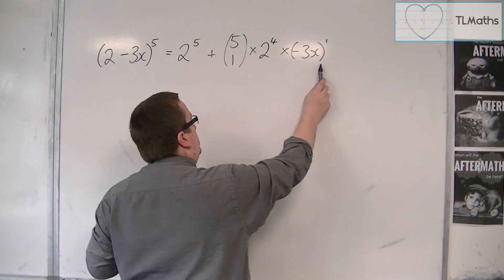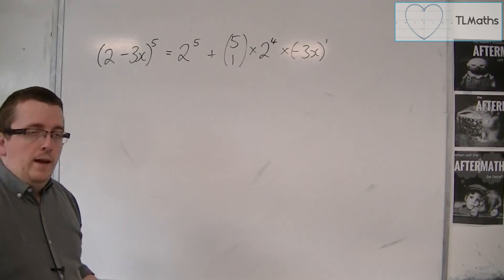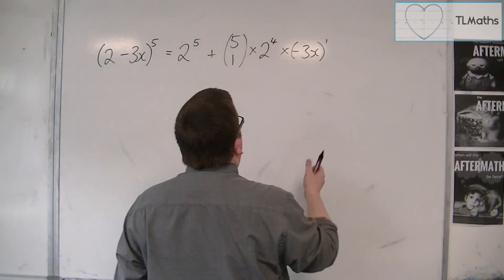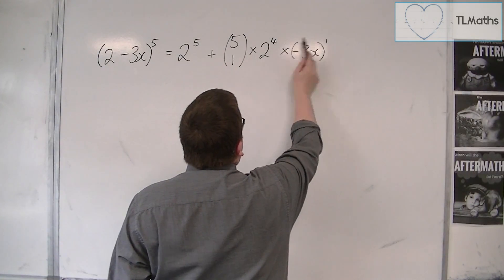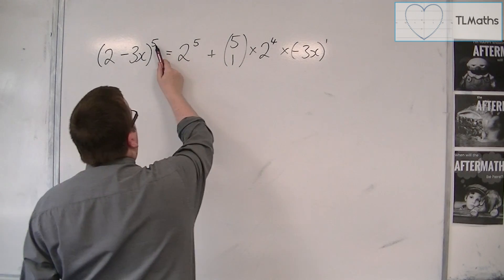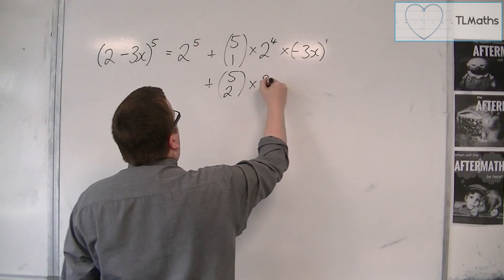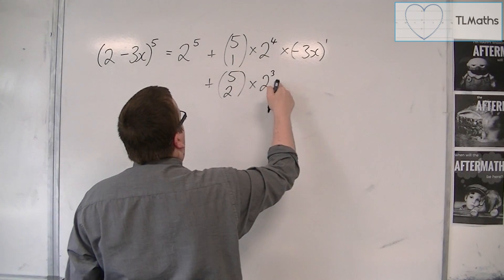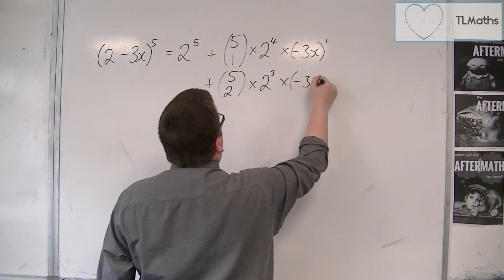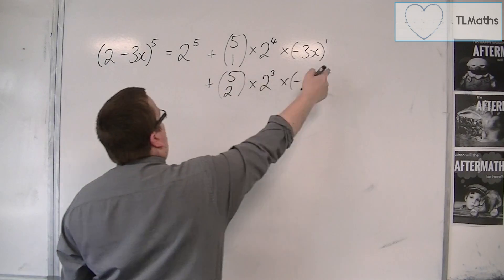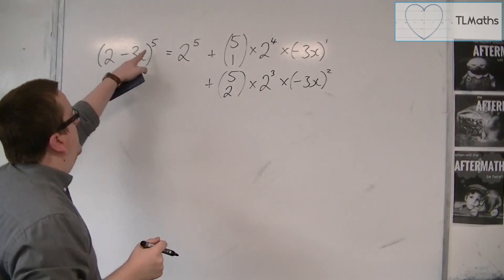And we put a bracket around the minus 3x to make sure that we don't muddle up that minus sign. And these two powers must always add up to 5, plus 5 choose 2 times 2 cubed, so we reduce the power and increase the power. So remember the 3 plus 2 must be equal to the 5.